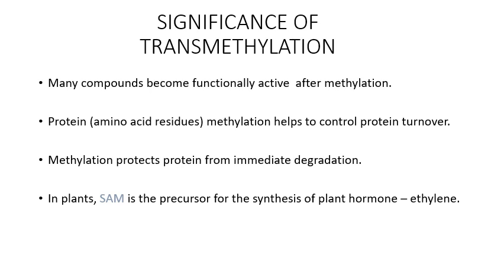The significance of transmethylation is that many compounds become functionally active after methylation. Protein methylation, specifically of amino acid residues, helps to control protein turnover. Methylation protects the protein from immediate degradation — which we learn about in post-transcriptional and post-translational modification. In plants, SAM is the precursor for the synthesis of the plant hormone ethylene. This is all about transmethylation.